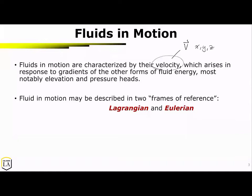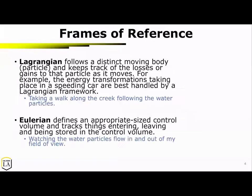Fluids in motion may be described in two frames of reference: Lagrangian and Eulerian. Lagrangian is essentially when you are tracking a particle. This particle is moving and you're keeping track of the losses or gains of that particle as it moves. For example, the energy transformations taking place in a speeding car are best handled by a Lagrangian framework. I also like to think of it as taking a walk along the creek and following the water particles.